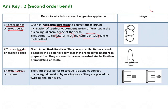Imagine this is a central incisor, this is a lateral incisor, and this is a canine. The canine crown is placed slightly lingually compared to the central and lateral, so here we give a lateral incisor bend. These bends are given in the horizontal direction, so you can't appreciate them from the frontal view — you need to see them from a top view, looking at the occlusal surface.